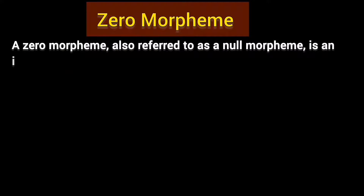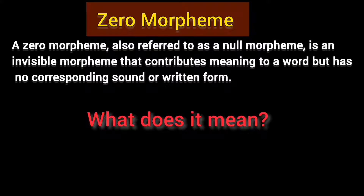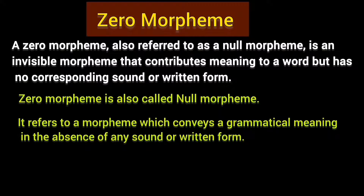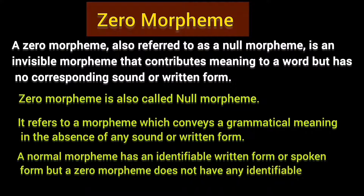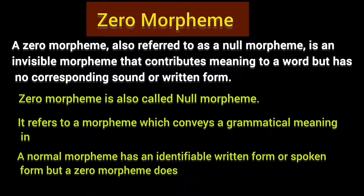A zero morpheme, also referred to as a null morpheme, is an invisible morpheme that contributes meaning to a word but has no corresponding sound or written form. It refers to a morpheme which conveys a grammatical meaning in the absence of any sound or written form. A normal morpheme has an identifiable written or spoken form, but a zero morpheme does not have any identifiable form or spoken sound in a word. Simply, a zero morpheme is a silent morpheme that conveys grammatical meaning but has no corresponding sound or written form.